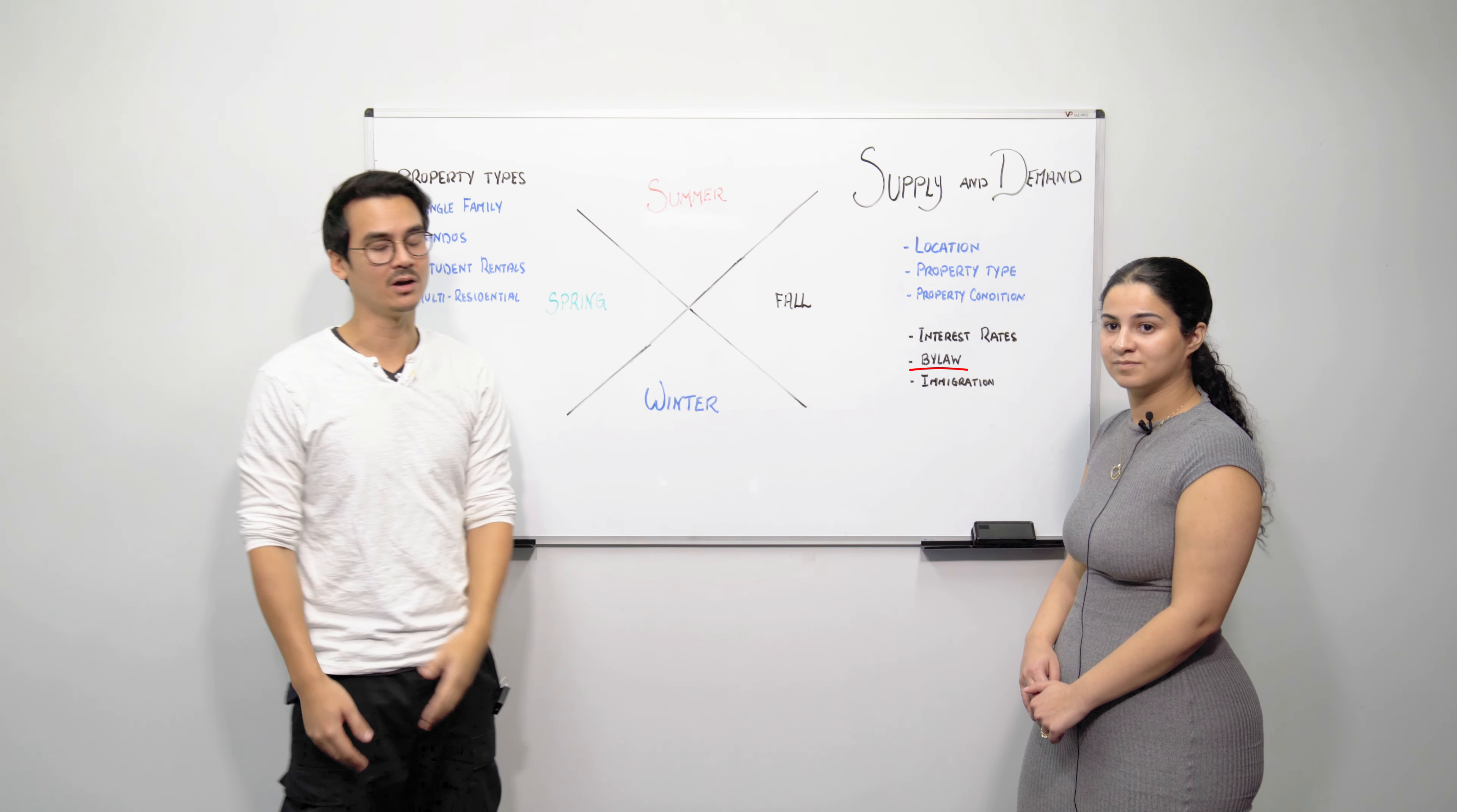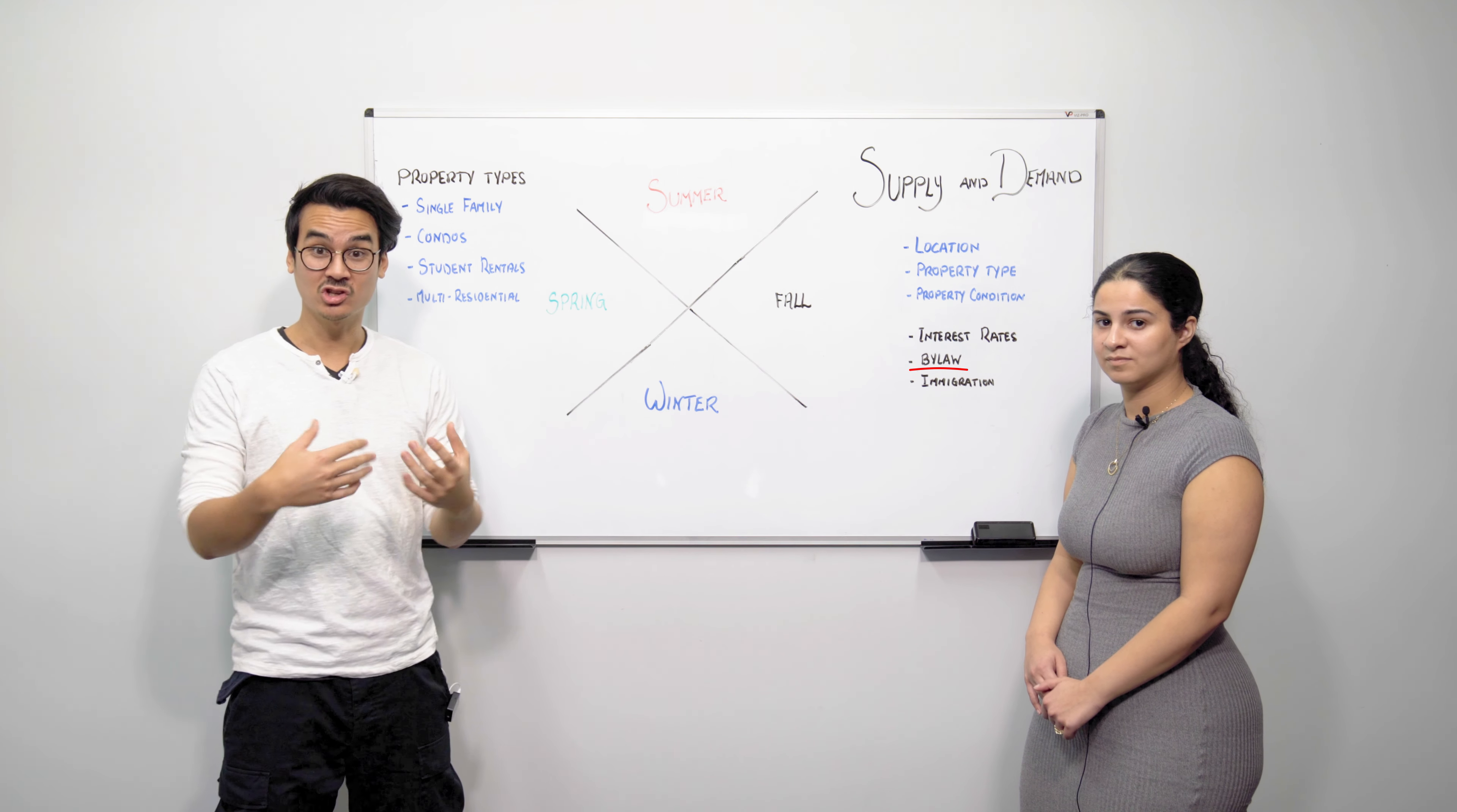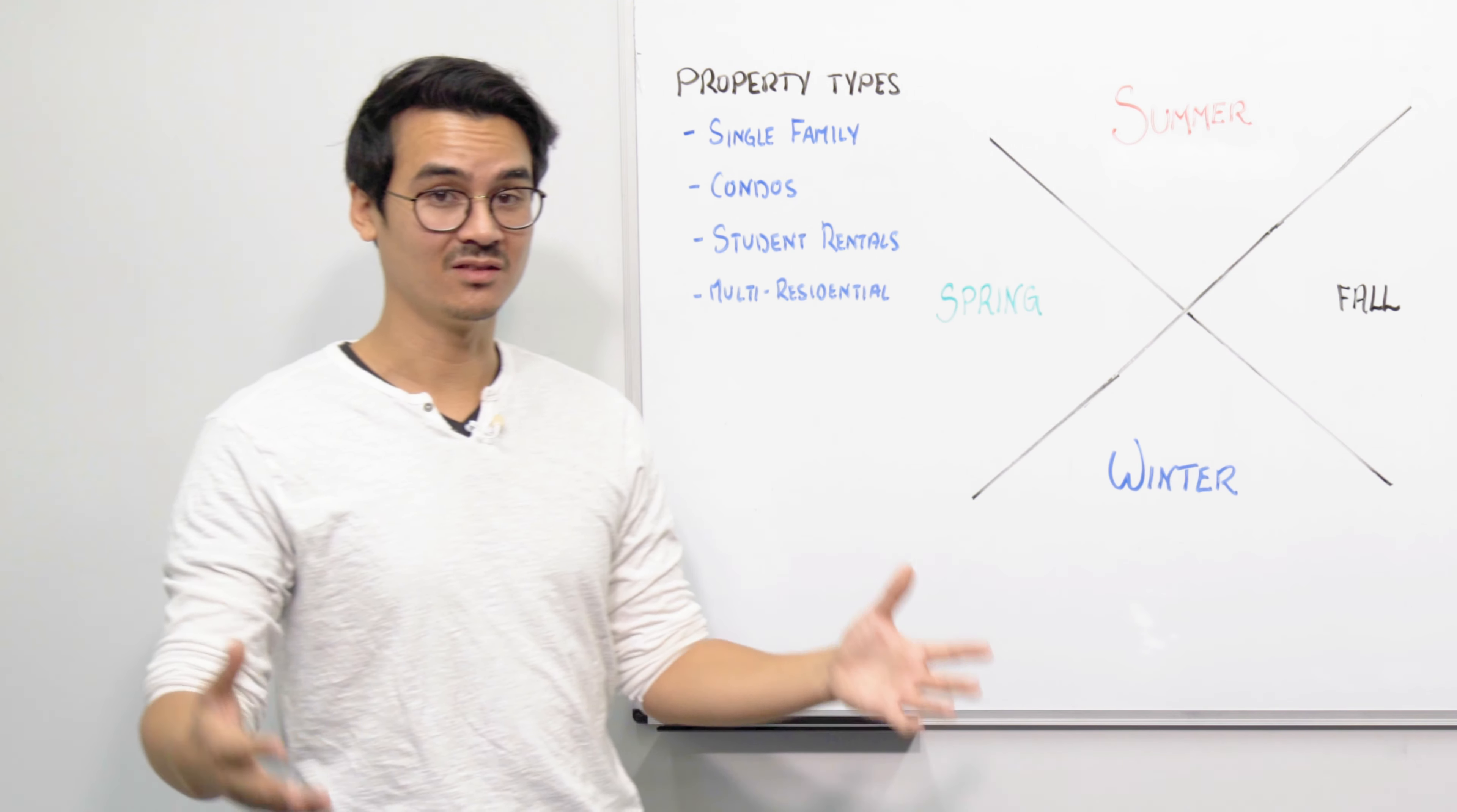And then the next thing that we have here is the bylaw. Now bylaw is a very interesting one and it often has to do with things like zoning and other regulations that come into play. For example, if you're looking at a multi-residential property and they've now changed the zoning to permit condominization of that property, now that demand on the investor side of things will be going up because people will look at it and say I can buy these properties and develop it.